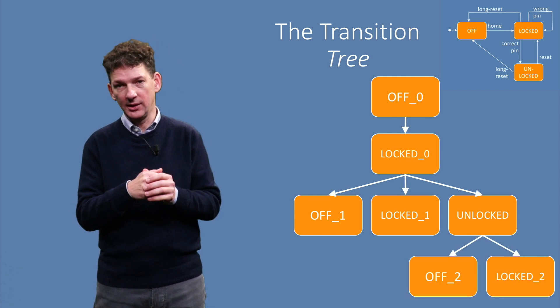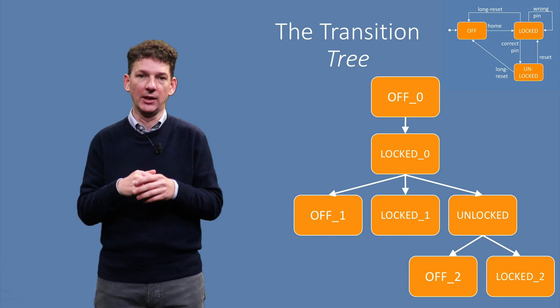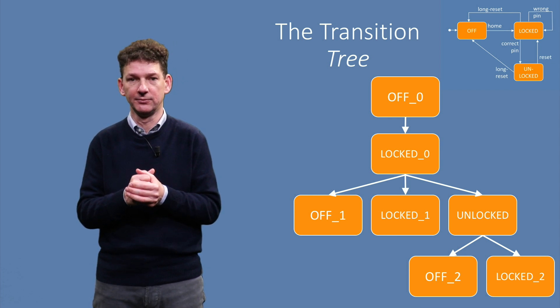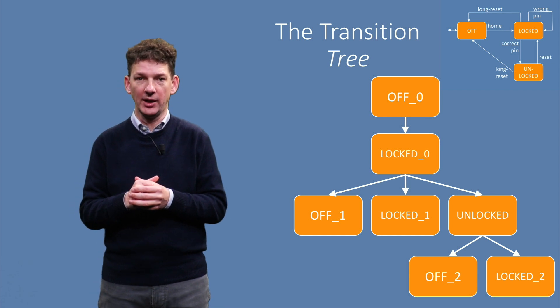From UNLOCKED, lastly, we can reach two different states, OFF and LOCKED. Here again the 2 level states were described at the 0 level, so we do not repeat their behavior. This then gives the tree that matches the original state diagram.